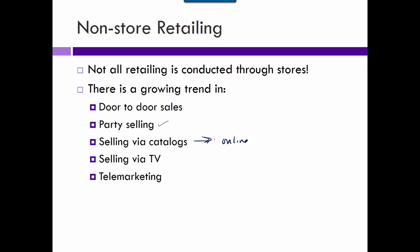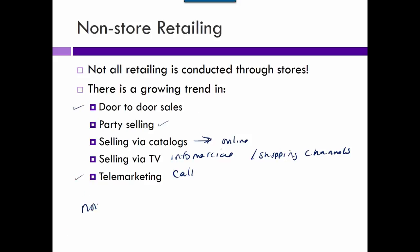Selling via TV includes infomercials, shopping channels like QVC and Home Shopping Network. Telemarketing — calling to try to get a sale — is tougher with do-not-call registries, so you see a little less of that now. Some of these methods also apply to non-profits.